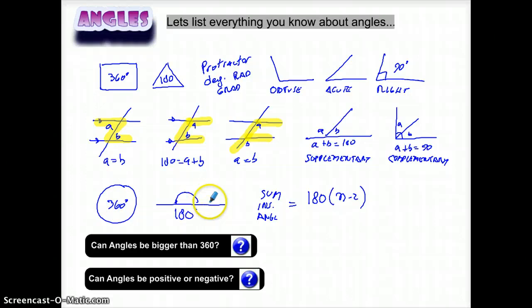360 degrees to go one fully around. 180 on a straight line. And actually, the sum of the interior angles is 180 times N minus 2. So for the triangle, it's three sides. 3 minus 2 is 1. 1 times 180 is 180. For a rectangle, N is 4 because it's 4 sides. 4 minus 2 is 2. 2 times 180 is 360. And you can do that for any sides.